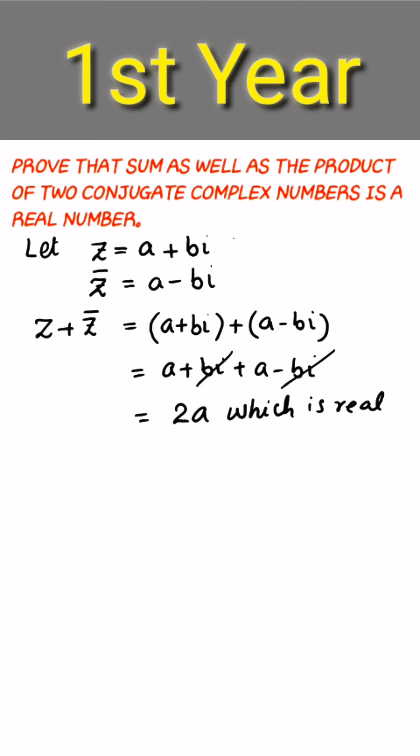Now the second part is the product, which means z times z bar. z is a plus b iota and z bar is a minus b iota. By using the formula it will become